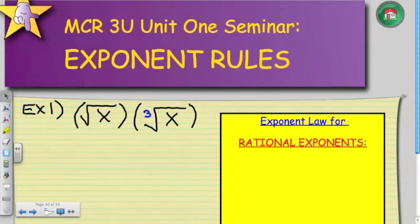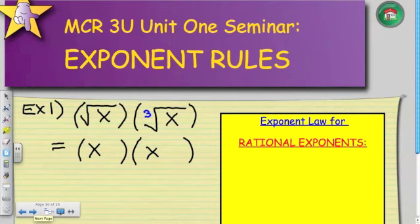First of all, the base for both of these questions are the same. They're both x. However, for the first radical expression, since the index should have a 2 here, and there is no power, we can translate this into x to the power of 1 half. The second expression is x to the power of 1 third.